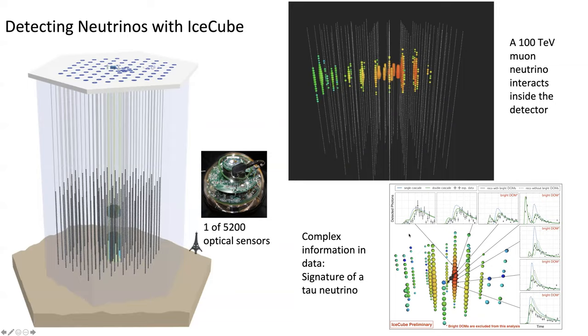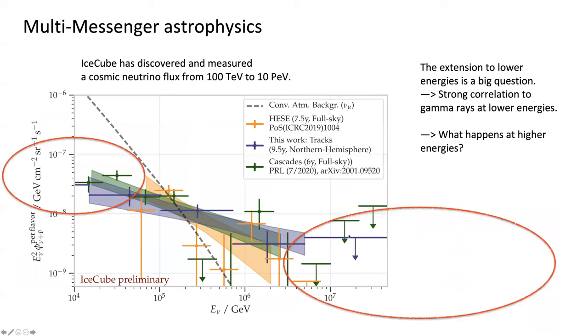So where are we today? This slide shows the cosmic neutrino flux that we've observed to date. It ranges from 10^5 GeV, from about here, to about 10^7 GeV. There are multiple datasets and multiple fits that characterize this flux.